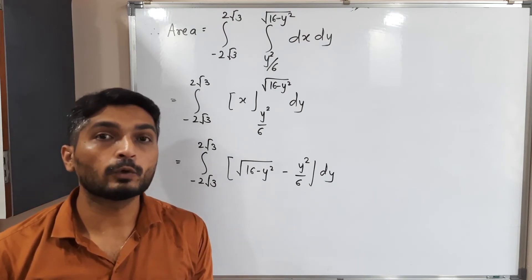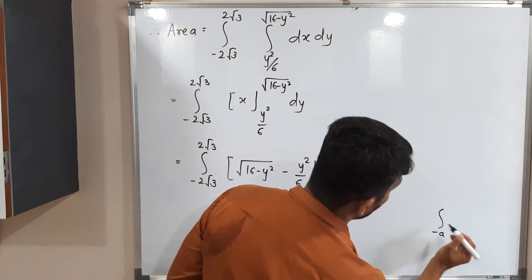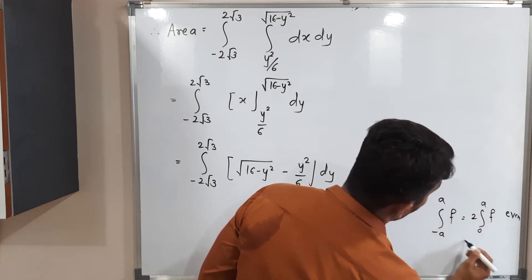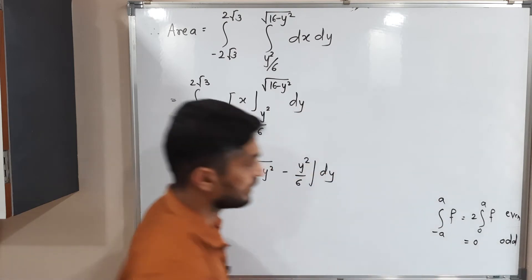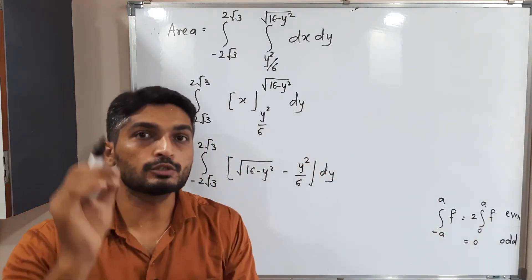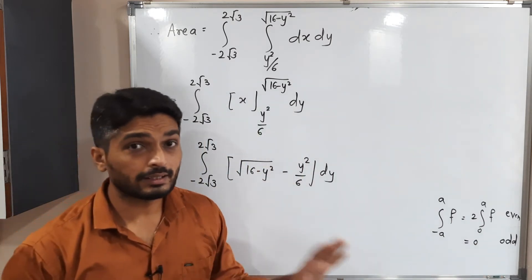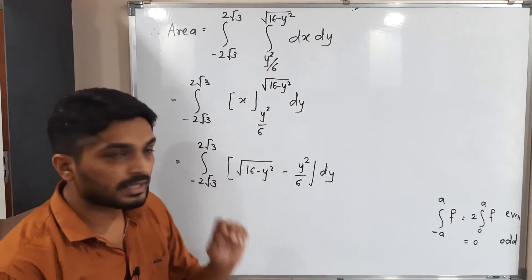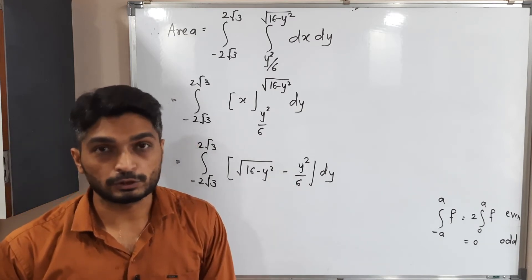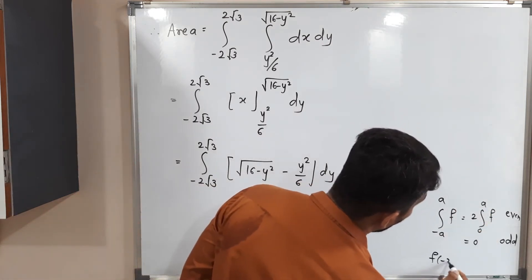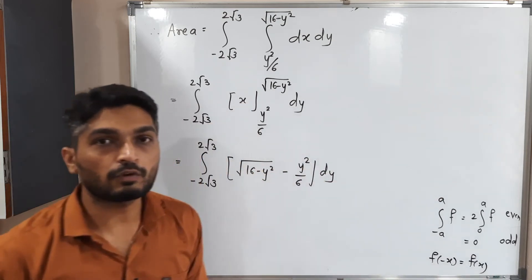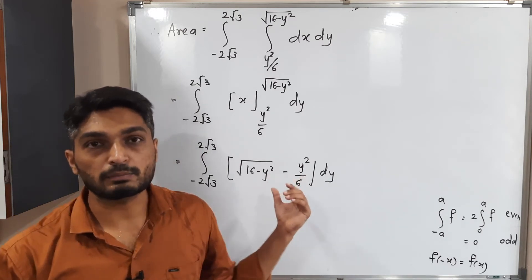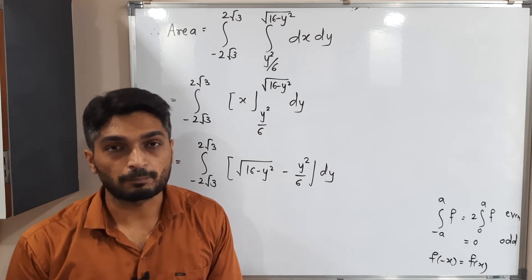We use the result: ∫ from -a to a f = 2∫ from 0 to a f if f is even, and 0 if f is odd. Since our limits are -2√3 to 2√3, and we have y² everywhere — which gives an even function (since f(-y) = f(y)) — we apply the first result.